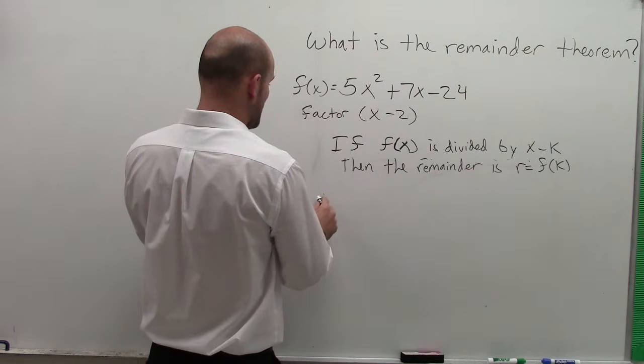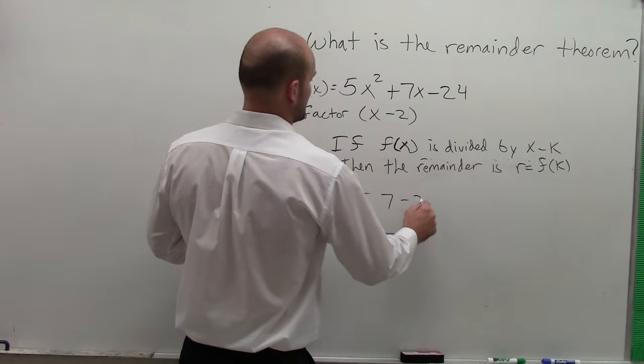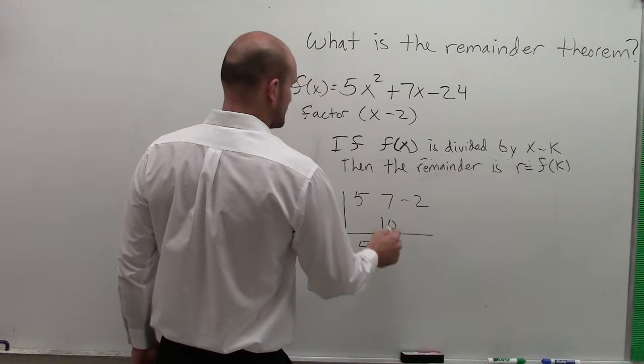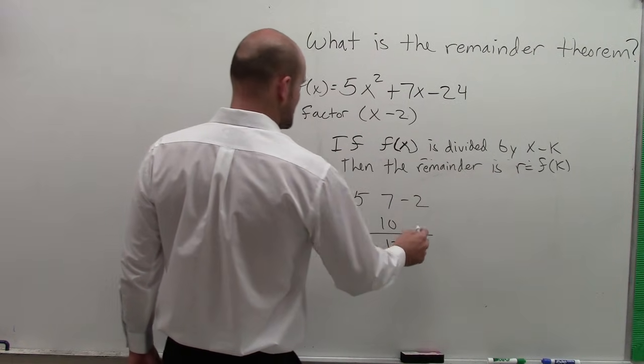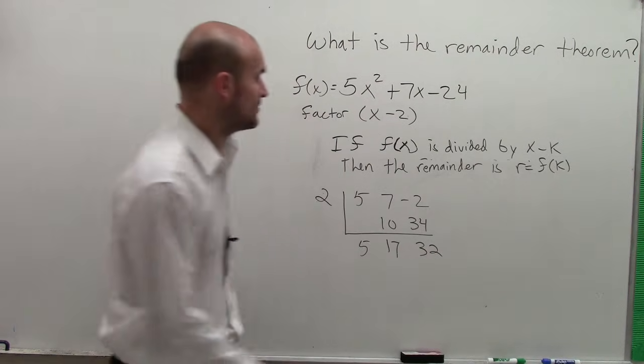So let's see, first of all, if we get the same answer. So now my k is positive 2, and I have 5, 7, negative 24. Bring down the 5. 5 times 2 is 10, 17. 17 times 2 is going to be 34, 10. Now let's evaluate.